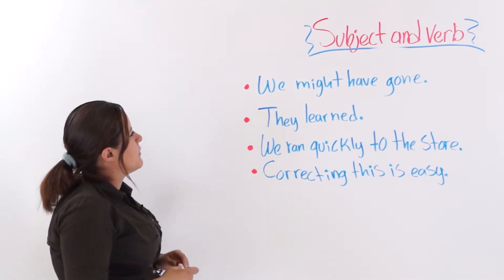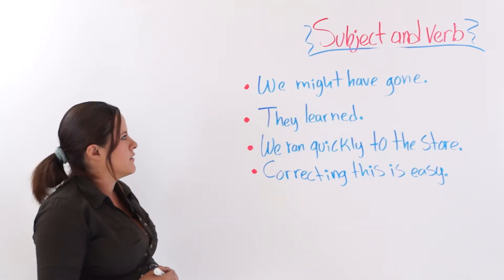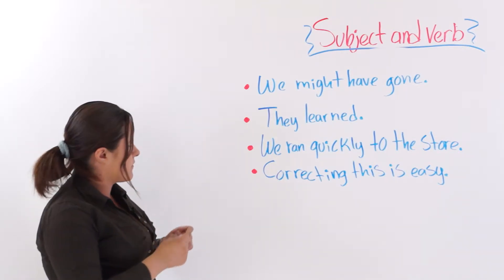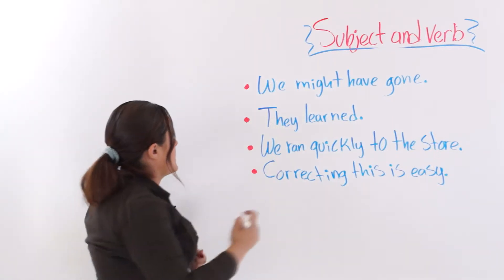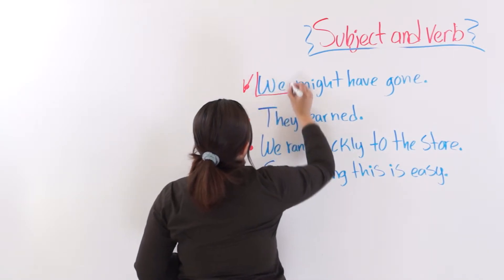Alright? The first one says, we might have gone. We might have gone. Is that a subject and verb sentence? Yes, it is. Why? Because we have the subject, we.